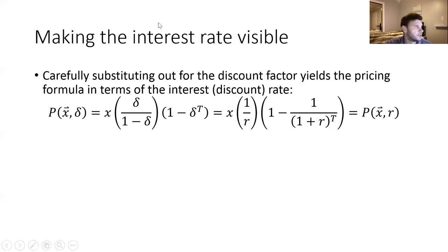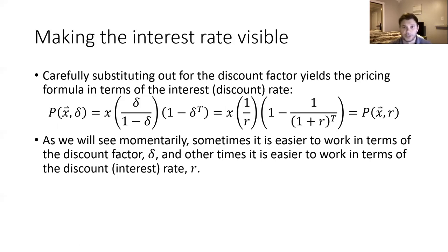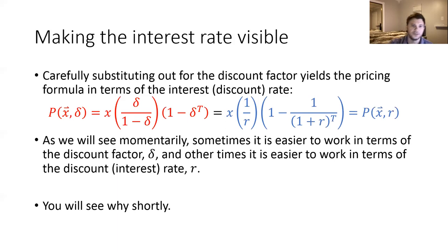So we could write the pricing function and see it in terms of the interest rate. Sometimes it's more convenient to manipulate the pricing function in terms of the discount factor Delta; in many applications it's more convenient to express it in terms of the discount rate R. In order to make the interest rate visible, we carefully substitute out for the discount factor Delta. That first term in parentheses, Delta over one minus Delta, simplifies to just one over R after substituting the definition of Delta. So we have these two different perspectives on the pricing function — one in terms of the discount factor, one in terms of the discount rate — and you can use either to calculate the price of the uniform finite annuity.